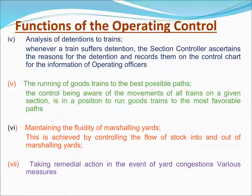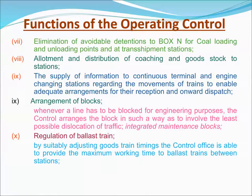Maintaining the fluidity of marshalling yards is achieved by controlling the flow of stock into and out of yards and taking remedial action in the event of yard congestion. Elimination of avoidable detentions to wagons at loading and unloading points and transhipment stations. Allotment and distribution of coaching and goods stock to stations. Supply of information to junction terminals and engine-changing stations regarding train movements to enable arrangements for reception and onward dispatch. Arrangement of blocks: whenever a line has to be blocked for engineering purposes, the control arranges the block to involve the least possible dislocation of traffic.